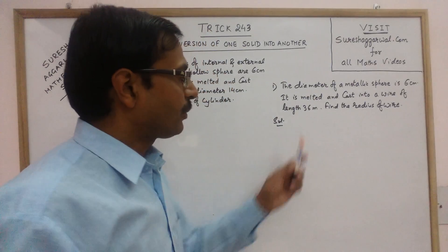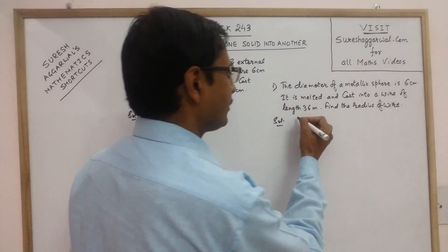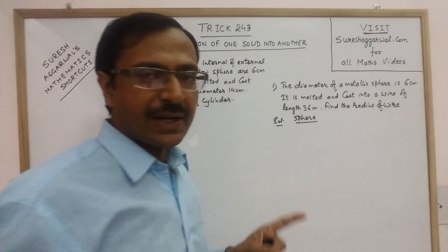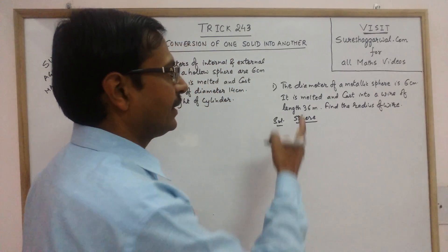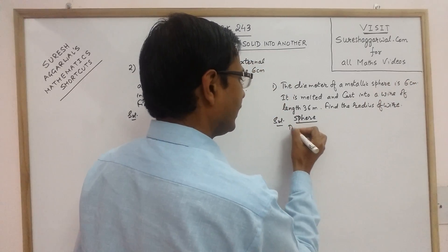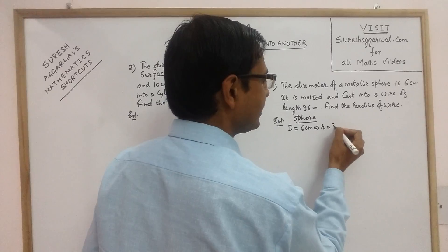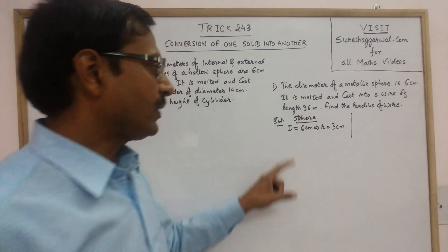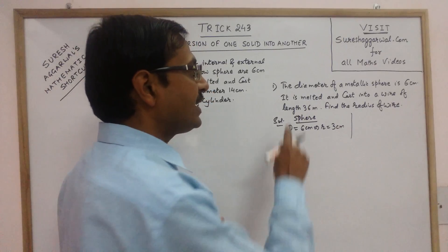In the first problem, I have taken a metallic sphere. A sphere has only one dimension, that is its radius. The diameter of the metallic sphere is 6, so the radius is half of this, that is 3. Now the dimension of the sphere is given.